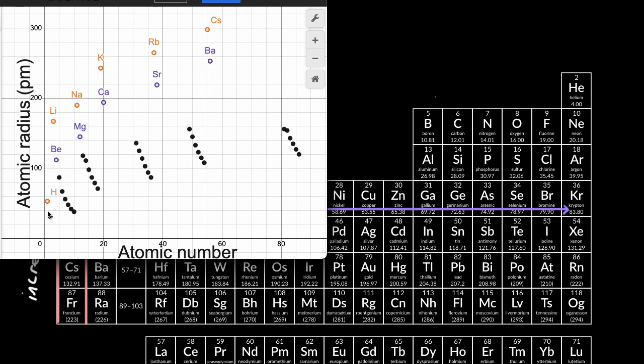You see the same thing with group two. This is the second column in the periodic table of elements. So the data confirms our intuition.